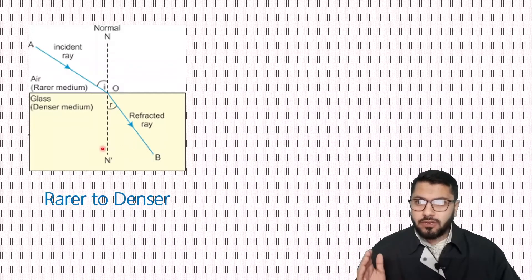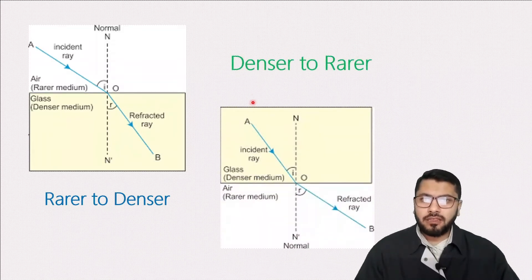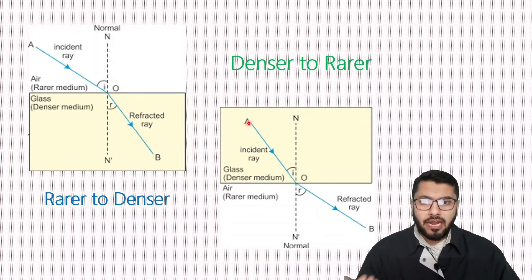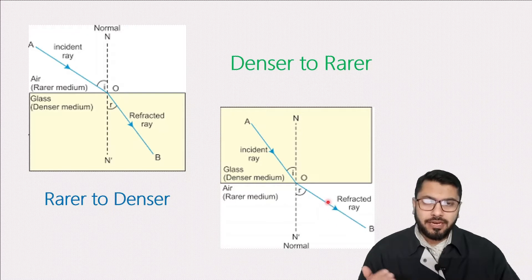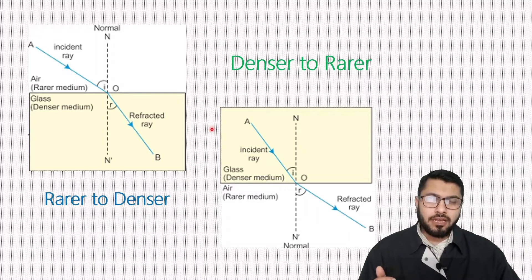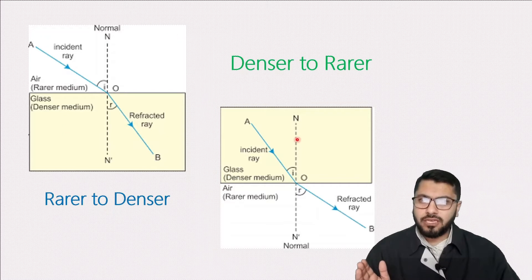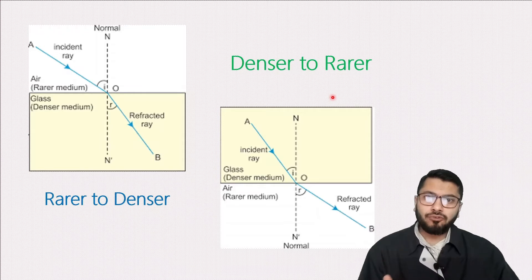It deflects towards the normal. We know this phenomenon already — it deflects towards the normal. The next phenomenon is the opposite: when light goes from glass to air, that means from a denser medium into a rare medium, it deflects away from the normal. On these bases we will study lateral displacement. I've given an overview before coming to that, so now let's move on to the animation of these two things — rare to denser and denser to rare — then we move to the lateral displacement animation.